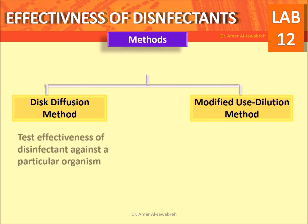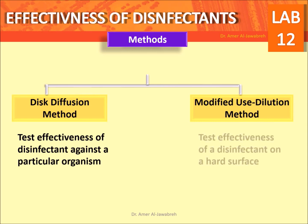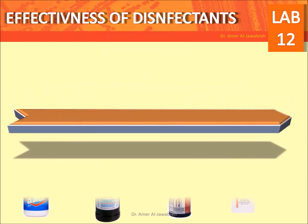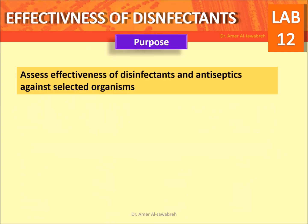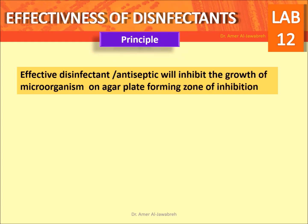The disk diffusion method is used to test the effectiveness of a disinfectant against a particular organism and on a surface. Purpose: to assess the effectiveness of disinfectants and antiseptics against selected organisms. Principle: an effective disinfectant or antiseptic will inhibit the growth of microorganisms on an agar plate, forming a zone of inhibition.